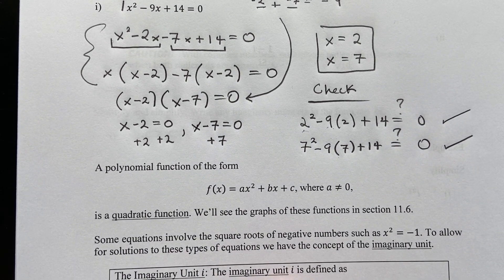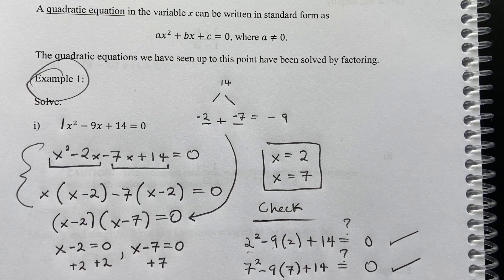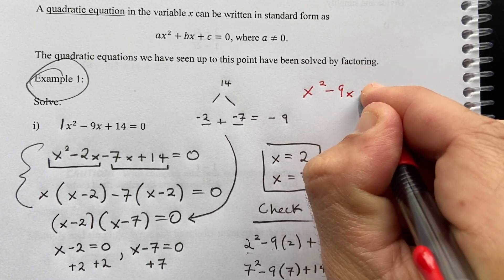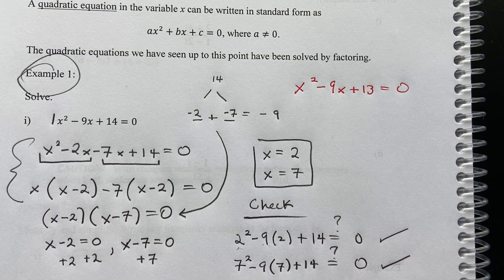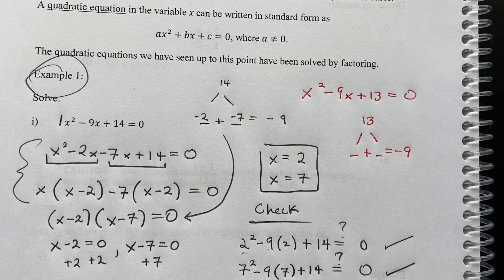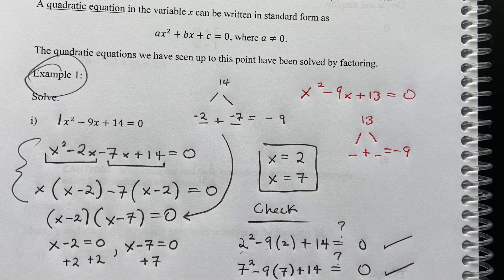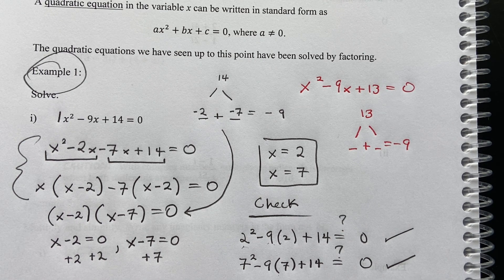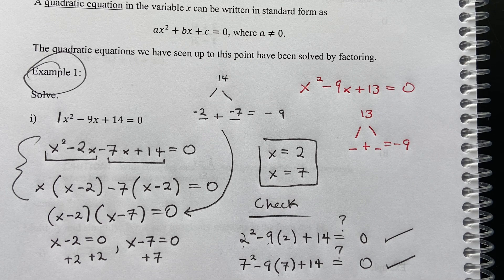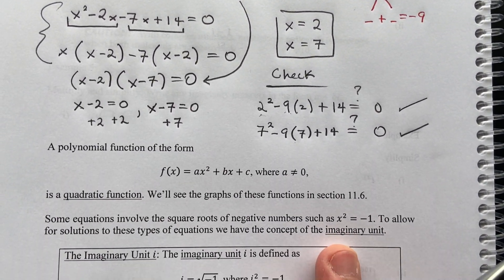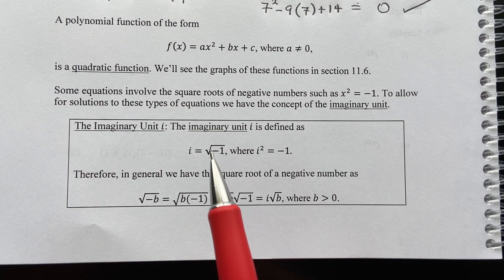Just a reminder about our ability to solve by factoring — but not all polynomials factor. For example, what if instead I had x squared minus 9x plus 13 equals 0? I'd be looking for numbers that multiply to 13 and add to negative 9, and that doesn't work. So we want a method that works all the time, and we're inching our way there by talking about the square root property.